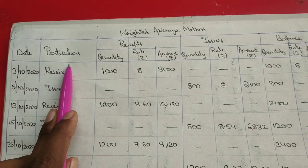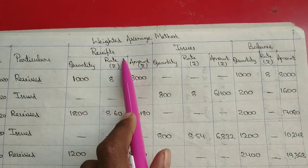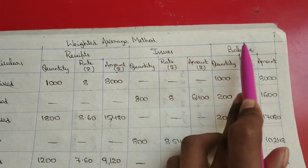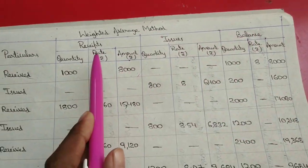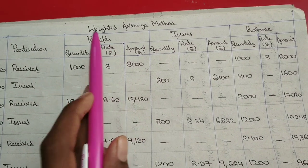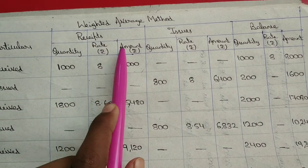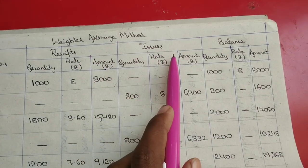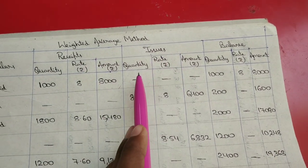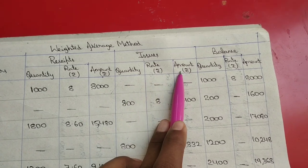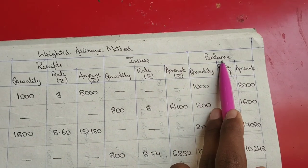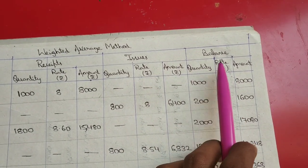Now let's set up the stores ledger table with the following columns: Date, Particulars. Under Receipts: Quantity, Rate, Amount. Under Issues: Quantity, Rate, Amount. Under Balance: Quantity, Rate, Amount.